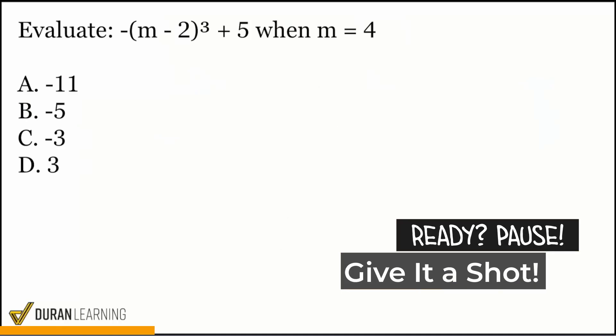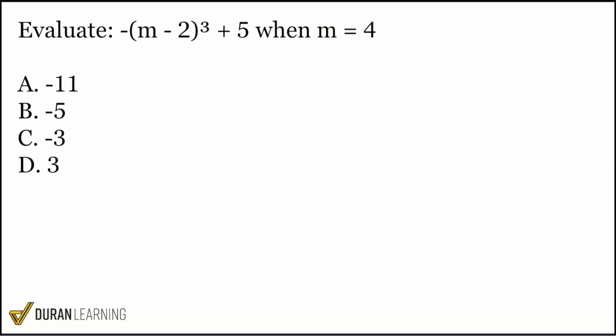And let's handle this next one here. So for this next one, we see that we're trying to evaluate this expression saying negative in front of the parentheses of M minus two, all to the power of three and then plus five. So there's a lot going on. So the first thing I'll focus on is just getting the M in the right place, which is four. So we have negative parentheses M, which is four minus two, all cubed and then plus five.